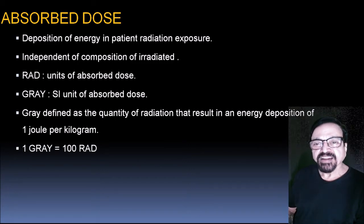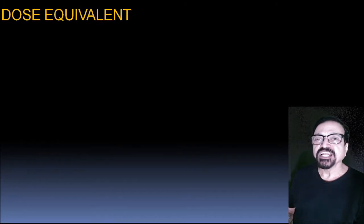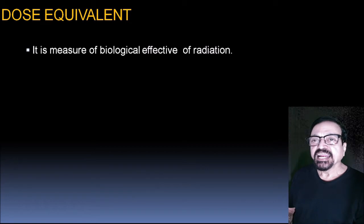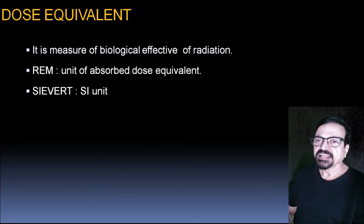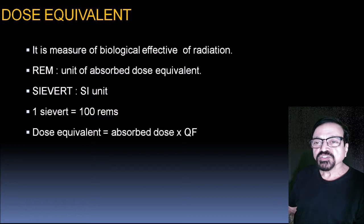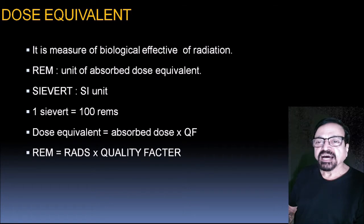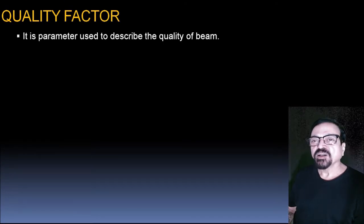The Gray is the SI unit of absorbed dose, defined as the quantity of radiation that results in energy deposition of one joule per kilogram. One Gray equals 100 Rad; one Rad equals one cGy. The dose equivalent measures the biological effect of radiation. The Rem is the unit of absorbed dose equivalent. One Sievert equals 100 Rem. Dose equivalent equals absorbed dose multiplied by quality factor (QF). Rem equals Rad × QF.